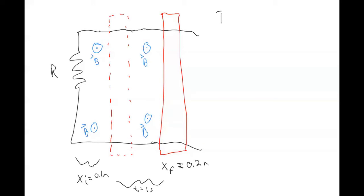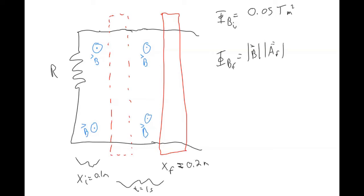We calculated our initial magnetic flux as 0.05 Tesla·meters squared. If we calculate our final magnetic flux, that's B times A_final times cosine theta. B is still the same, and the cross-sectional area is now y times x_final, times cosine theta.